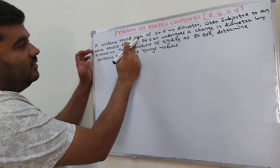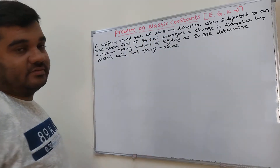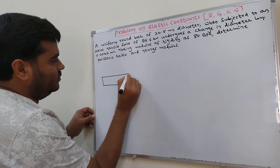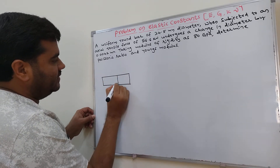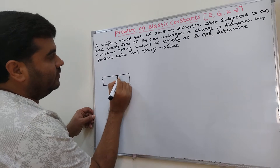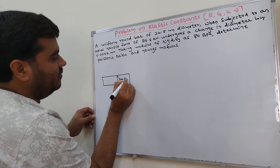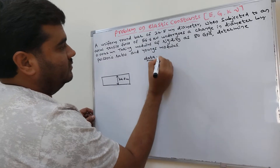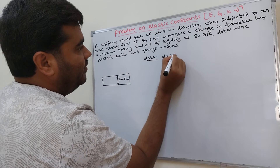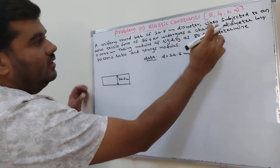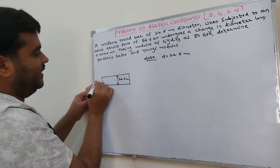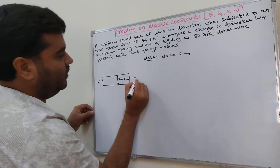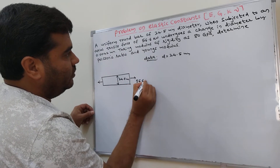A uniform round bar of 24.5 millimeter diameter. So the original diameter D equals 24.5 millimeter. When subjected to an axial force along the axis — an axial force of 56.6 kilonewton, which is 56.6 into 10 raise to 3 Newton.